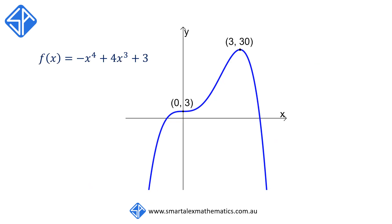Putting it all together, here is a picture of the function f(x) = -x⁴ + 4x³ + 3. As predicted, we have a horizontal point of inflection at x = 0 and a maximum turning point at x = 3.